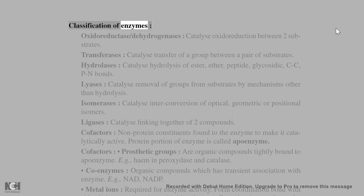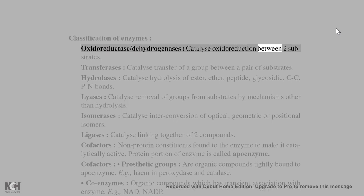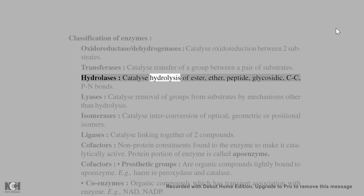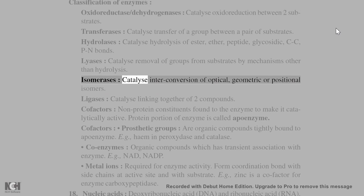Classification of enzymes: Oxidoreductase/dehydrogenases catalyze oxidoreduction between two substrates. Transferases catalyze transfer of a group between a pair of substrates. Hydrolases catalyze hydrolysis of ester, ether, peptide, glycosidic, C-C, P-N bonds. Lyases catalyze removal of groups from substrates by mechanisms other than hydrolysis. Isomerases catalyze interconversion of optical, geometric, or positional isomers. Ligases catalyze linking together of two compounds.